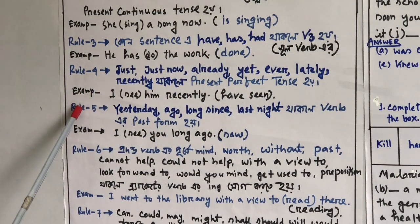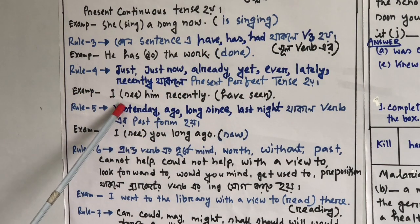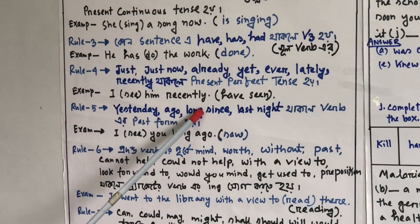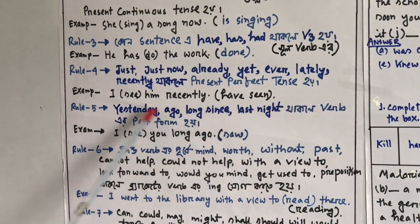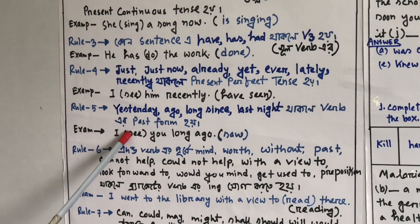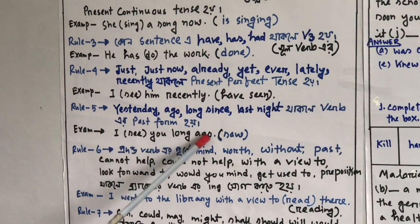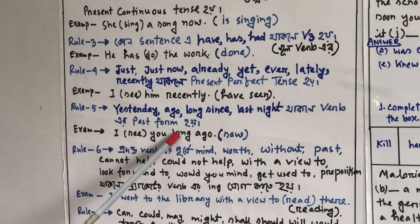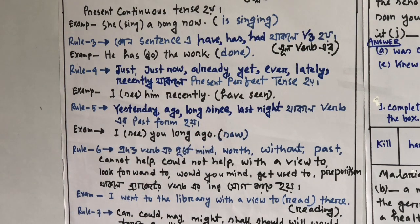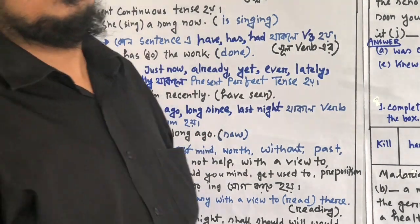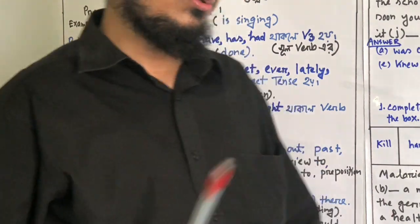Rule 5 — when words like 'yesterday,' 'ago,' 'long since,' or 'last night' appear in a sentence, use the simple past tense form. Example: 'I see you long ago' becomes 'I saw you long ago.'